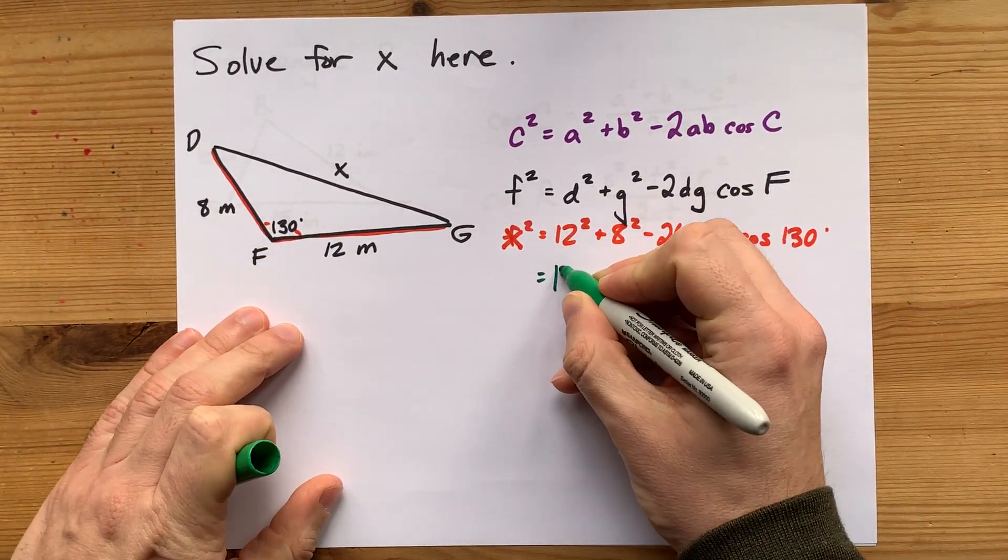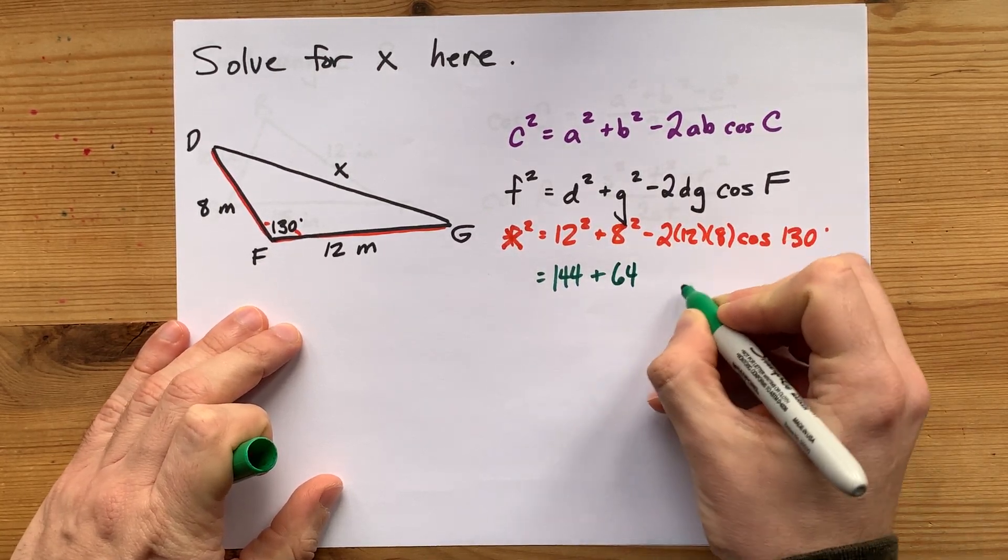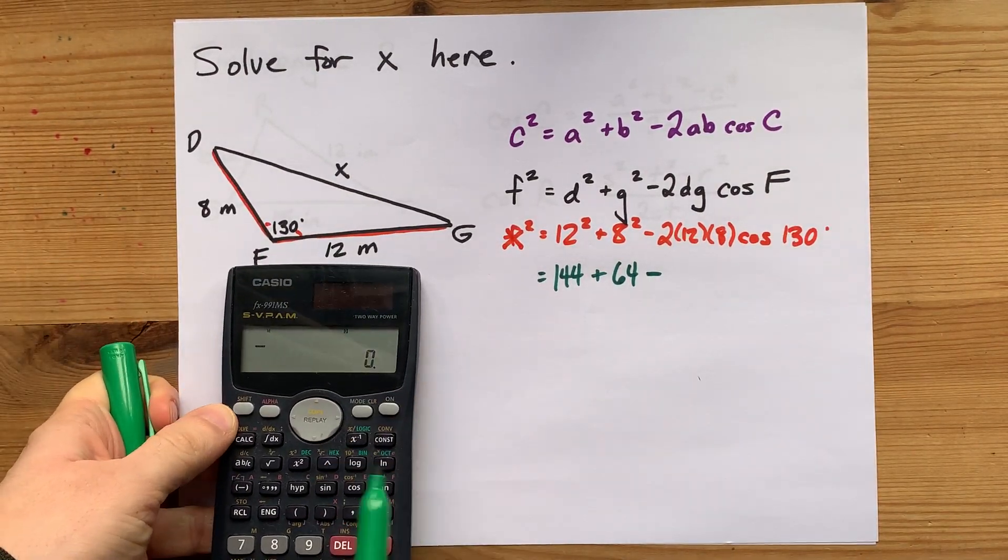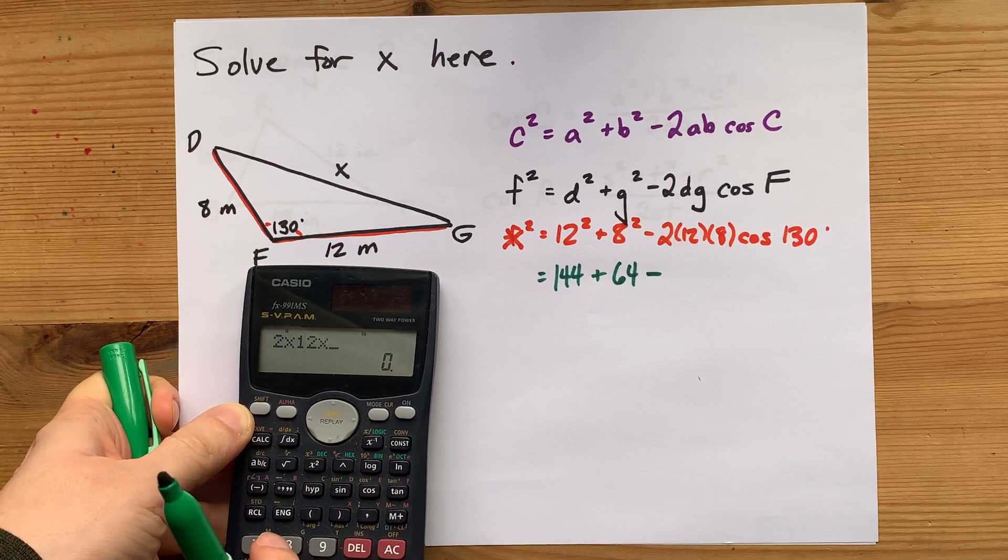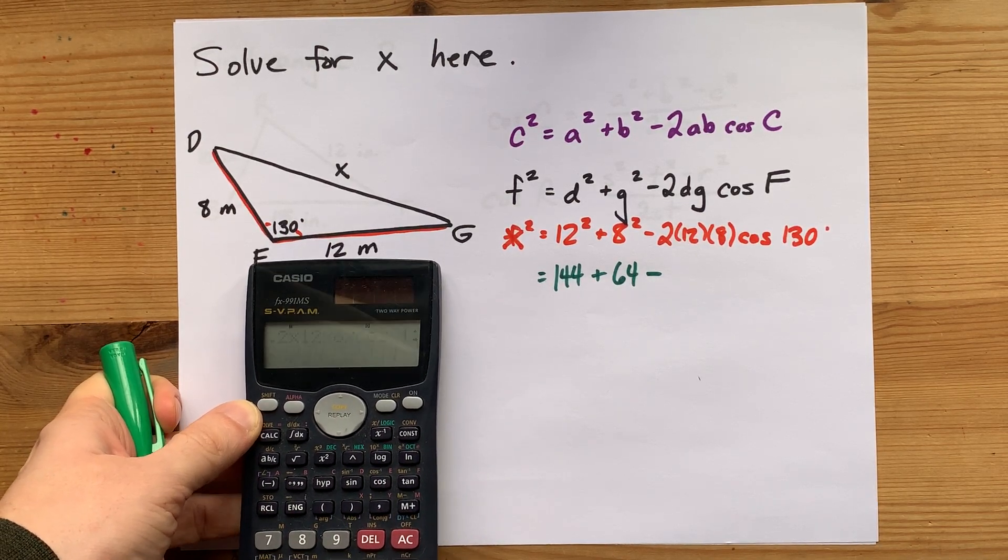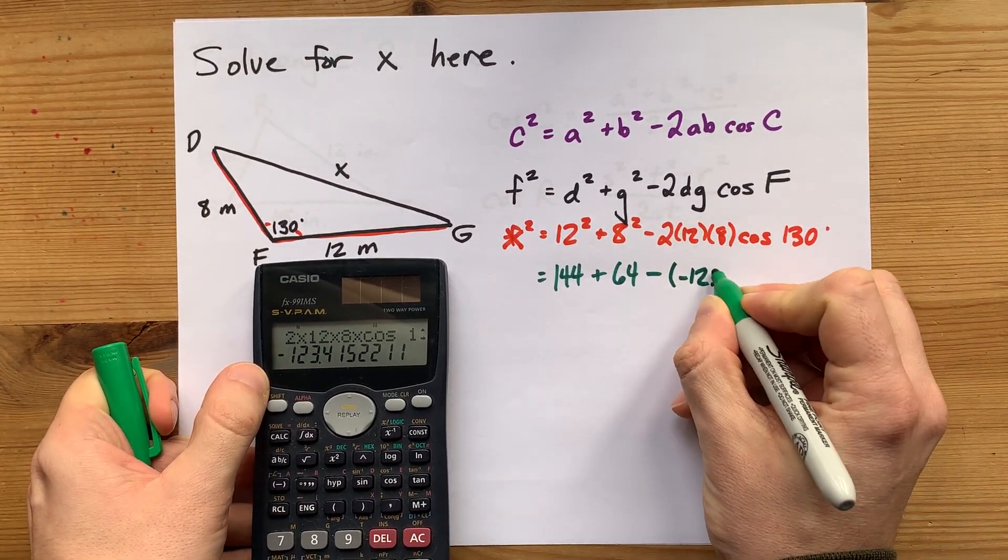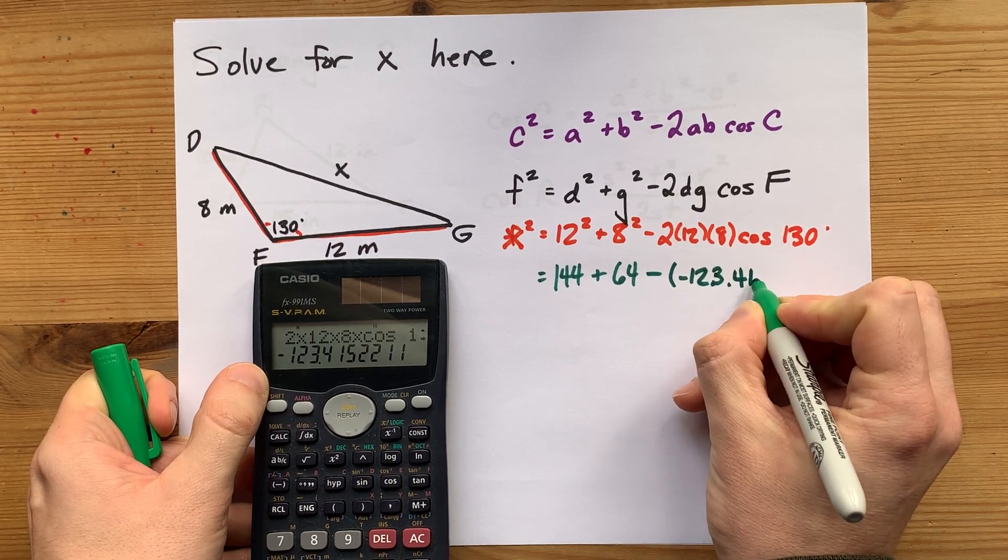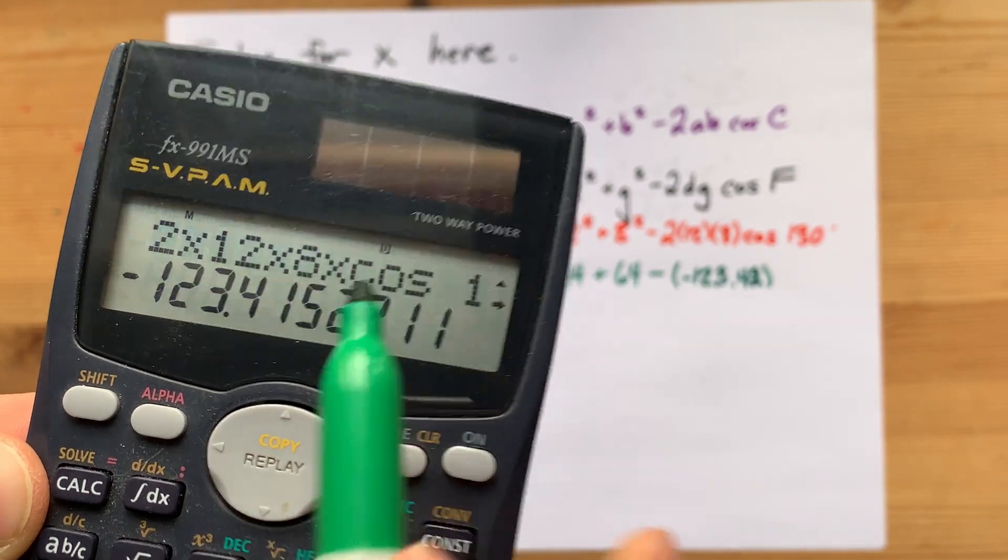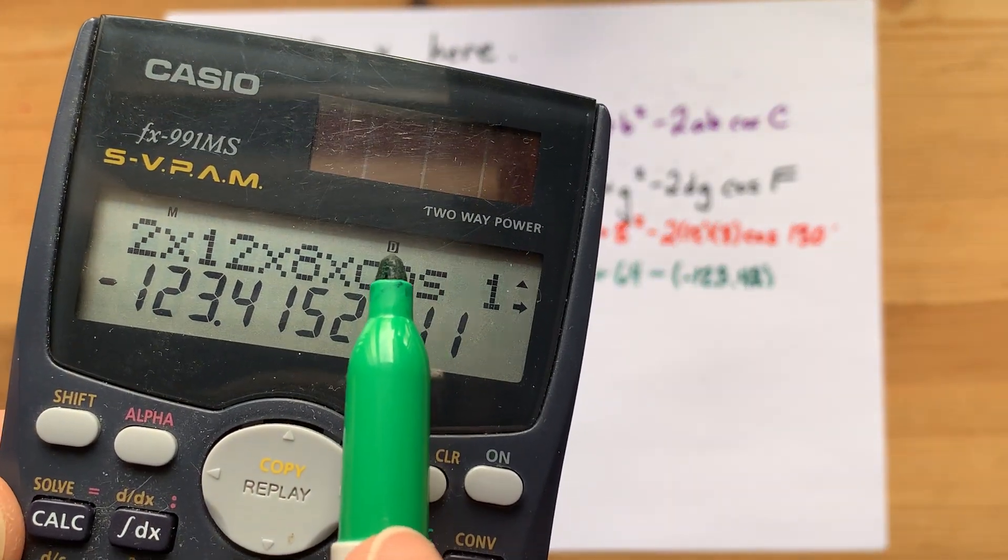12 squared is 144 plus 8 squared is 64 minus. And now on the calculator, I'm going to do 2 times 12 times 8 times cos 130. I get negative 123.42.